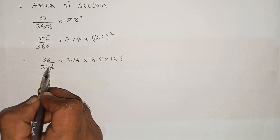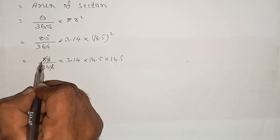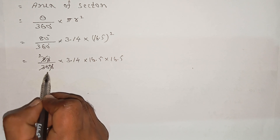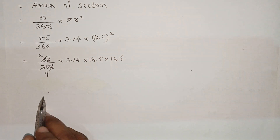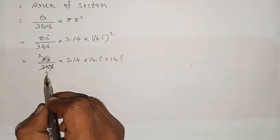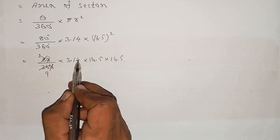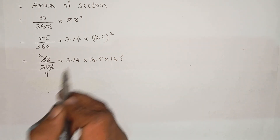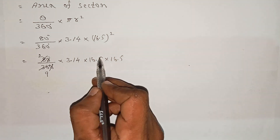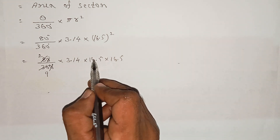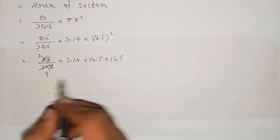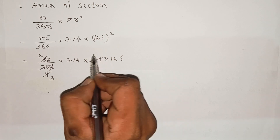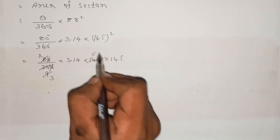Now simplifying: 8 is equal to 36, divide by 4 gives 2 equal to 8, and 4 into 9 equals 36. So theta divided by 9, with 3.14 remaining.